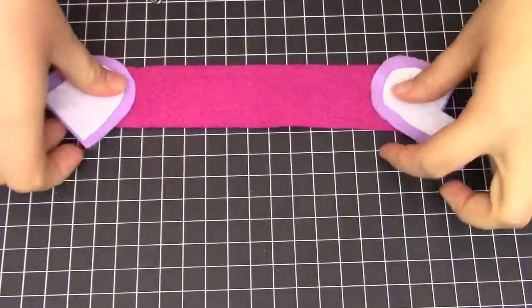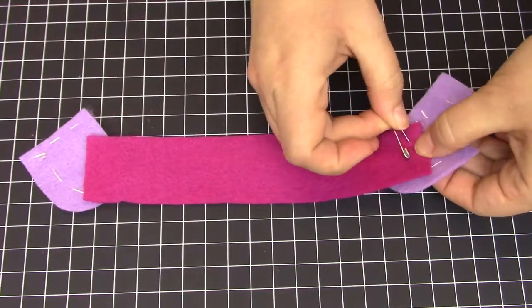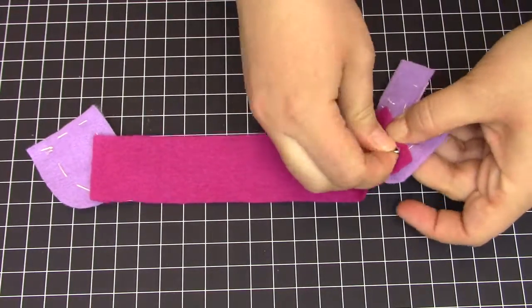To connect your pieces, arrange the heart halves at about a 45 degree angle, and use your pins to attach them from the back side.